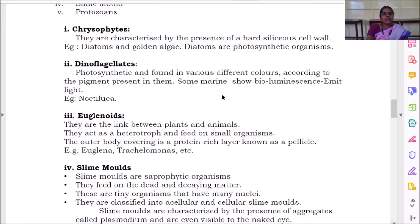Chrysophytes are characterized by the presence of hard siliceous cell wall. It means silica component. Example is diatoms and golden algae. Do you remember the images what I have shown in the class? Diatoms are photosynthetic organisms.